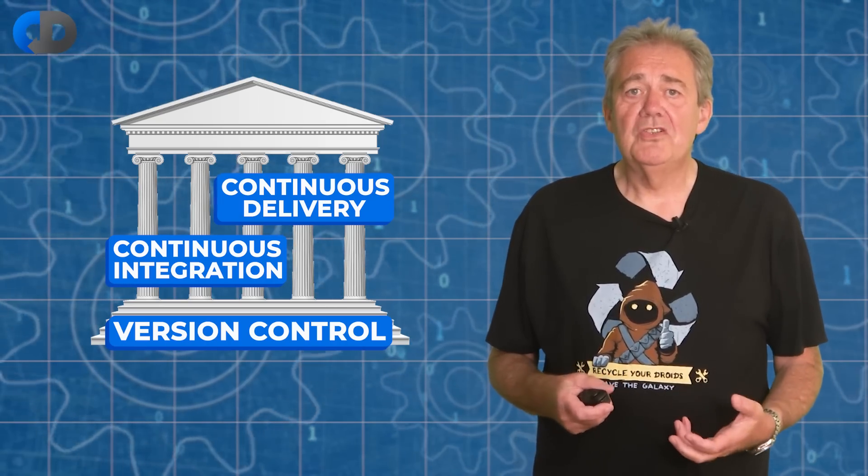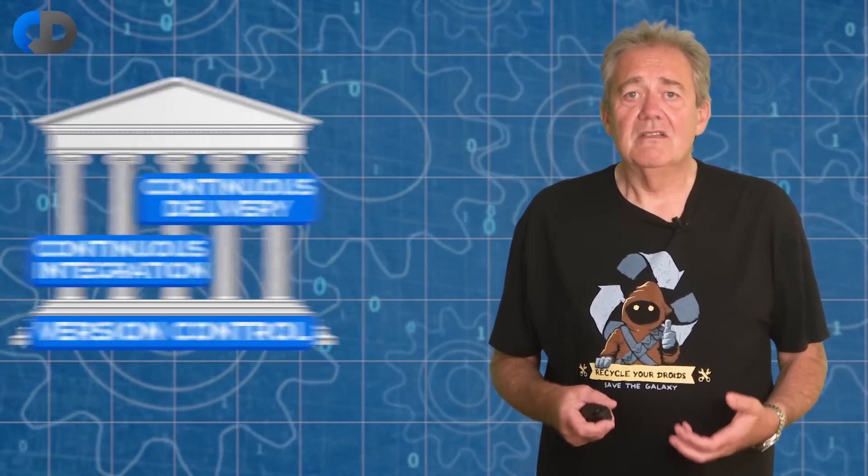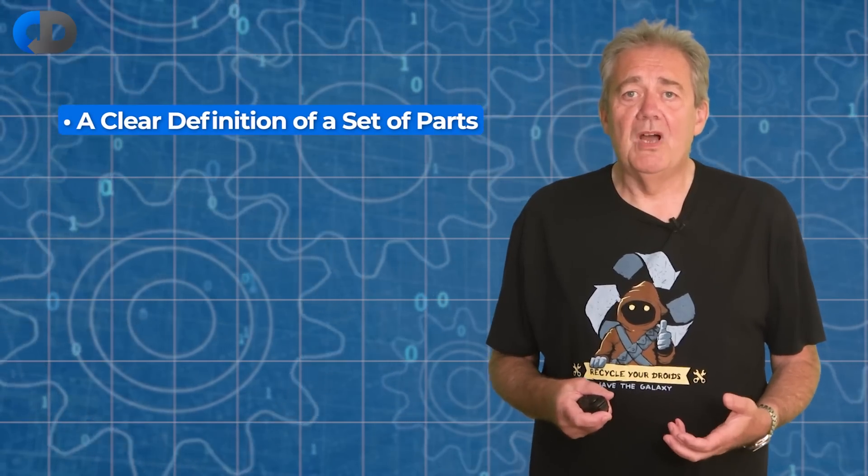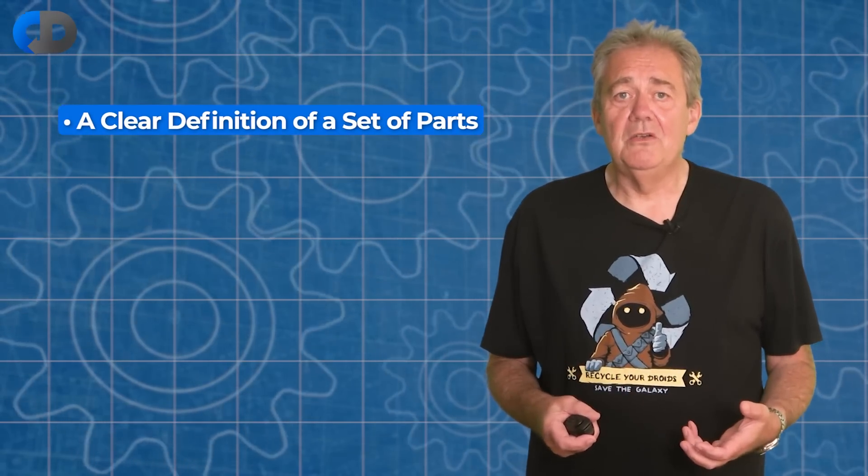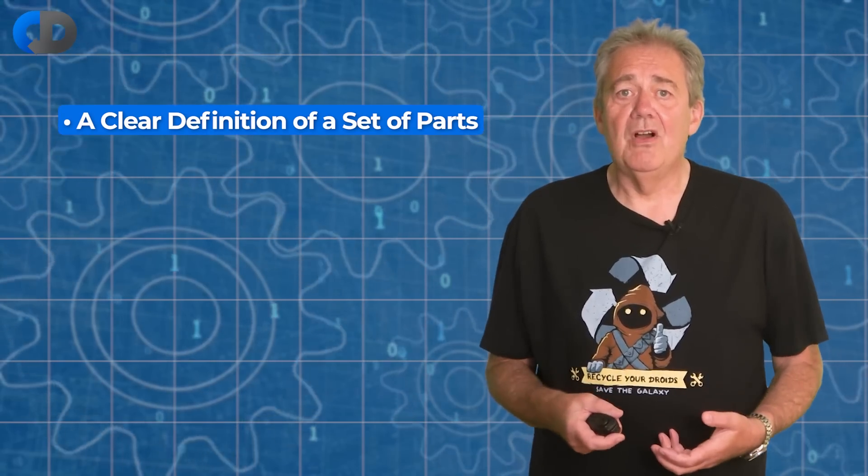What version control brings to the party are two things: a clear definition of what comprises a particular version of our code, the set of things that make our system a coherent whole.